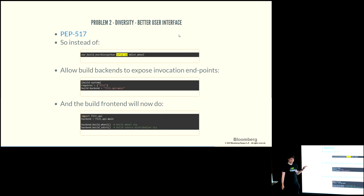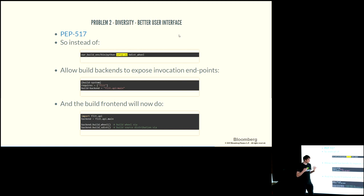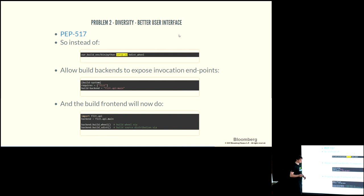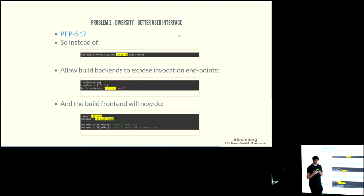PEP 517 removes the need for setup.py — which allowed arbitrary code — and instead provides a proper API for generating wheels. In the same pyproject.toml file you can specify your back end and its builder API endpoint. This gives us a programmatic API with nicer communication between front end and back end, rather than textual parsing — a more Pythonic way of doing things.